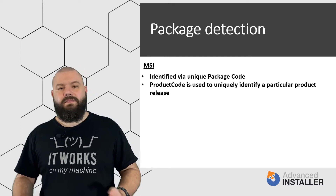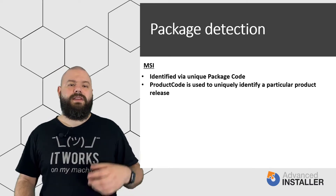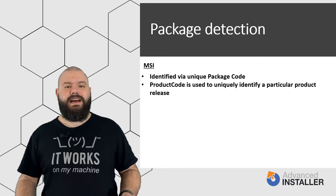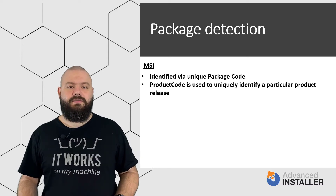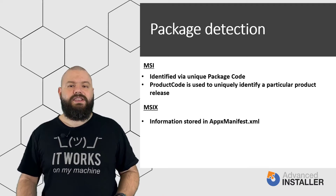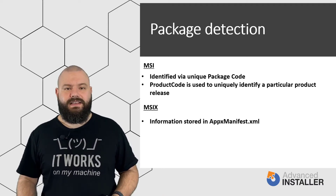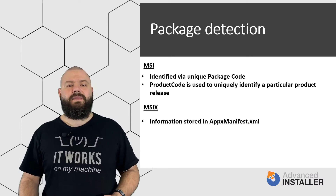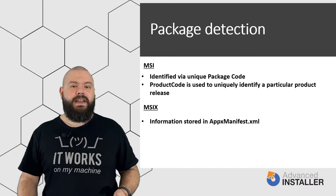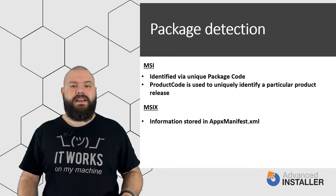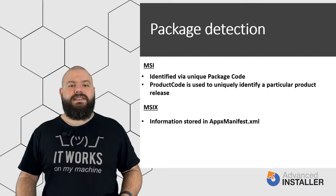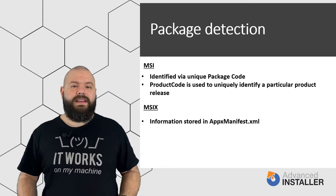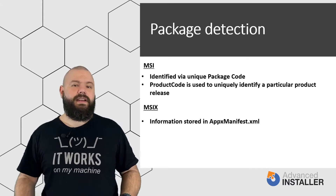The product version combined with the product code allows us to upgrade packages and keep an upgrade logic. Unlike MSI, MSIX does not come with a package code or other identifiers like that. All the information is stored in the Appx manifest XML. This XML file is the package manifest and must be present in any package. It contains the information defining the application and its features, all of which is used by the system to install, uninstall, update and control the app's behavior during its lifetime.